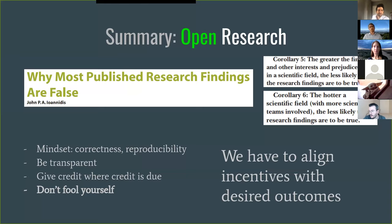How do we make all of this work? Practically, we have to find incentives and align them with the outcomes we desire. It must make sense for people to share data, share code, and do research out in the open. Until we align those incentives well and find low friction models, we may be fighting an uphill battle — but there are examples out there where this is attempted. You can already publish software as papers in certain journals, and you can publish your data and software artifacts. For example, you can use Zenodo and get a DOI that can be cited.